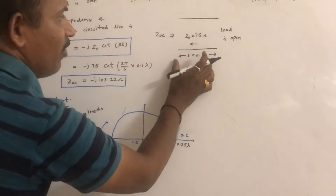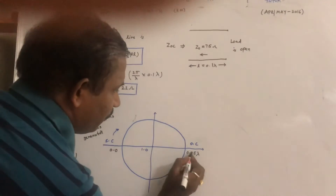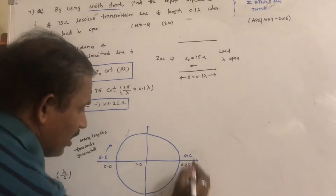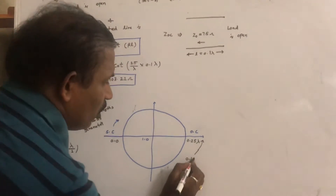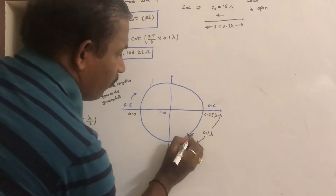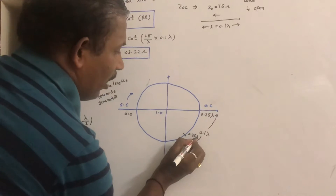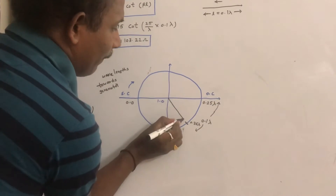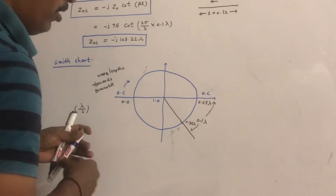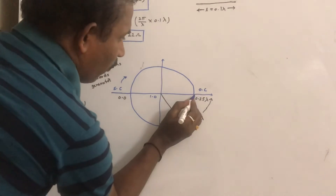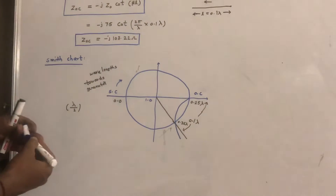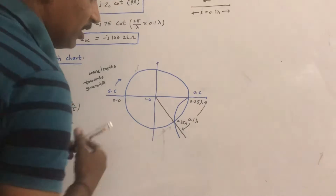From the open circuit end, we need to move 0.1 lambda towards the generator. So from 0.25, moving 0.1 lambda towards the generator will land at 0.35 lambda on the Smith chart. Draw a line from the 1.0 point to find the approximate reactance curve that passes through this point.